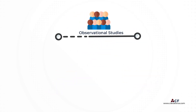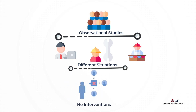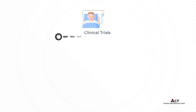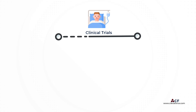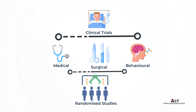Observational studies aim to find out what happens to people in different situations. They are called observational studies because the investigator observes individuals without manipulation or intervention. Clinical trials, on the other hand, are studies performed in people aimed at evaluating a medical, surgical, or behavioral intervention. These studies are usually randomized controlled trials where investigators do intervene and look at the effects of the intervention on an outcome.